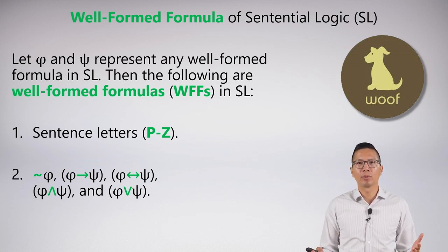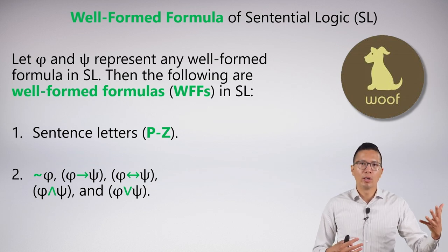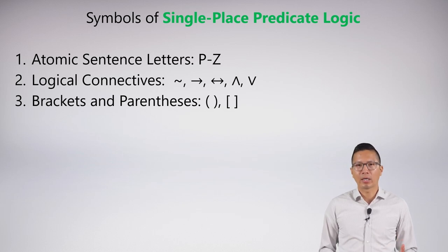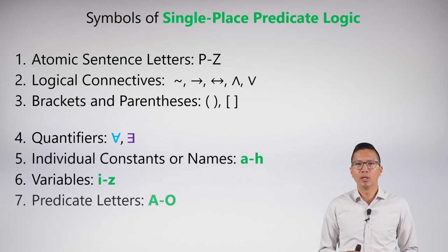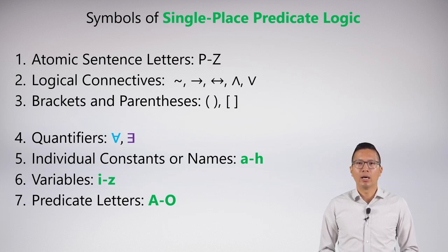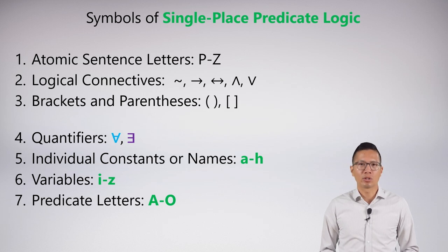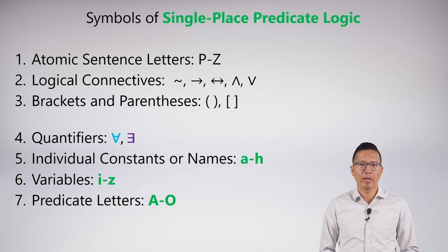We have the symbols of single-place predicate logic, and we know the rules about syntax, well-formed formulas, and so on. What we need to do is add the things we need for predicate logic. From the previous video, we know that we need the quantifiers — the upside-down A for the universal and the backwards E for the existential. We need name letters, lowercase a through h, and variable letters, lowercase i through z.